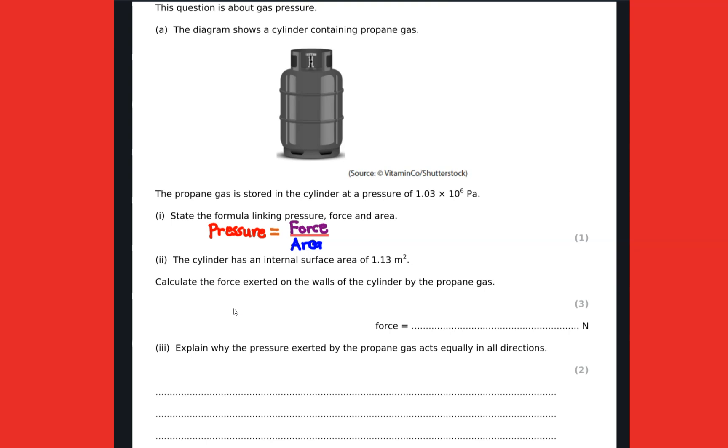Now we are going to make force the subject of the formula so that we can be able to work out this. So in order to get this we are going to say force equals pressure times area, then substituting pressure and area we are going to work it out.